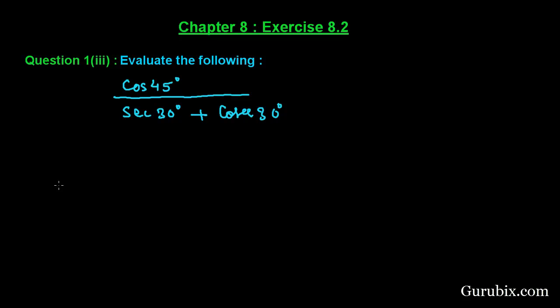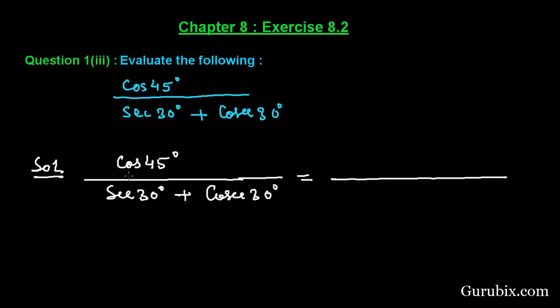Let us see how to solve this. We know that cos 45° equals 1 over square root of 2, sec 30° is 2 over square root of 3, and cosec 30° is 2. Substituting these values into our expression.